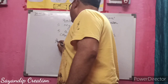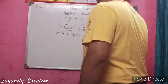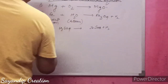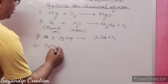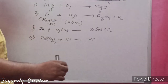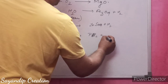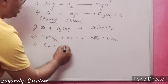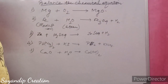One more equation to balance: zinc plus H2SO4 giving ZnSO4 plus H2. Another one is lead nitrate with potassium iodide giving lead iodide and potassium nitrate. And one more: calcium oxide plus water giving calcium hydroxide. These are the chemical reactions I have given to you.